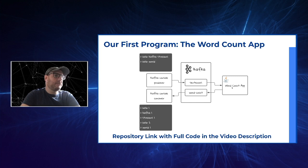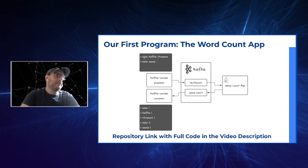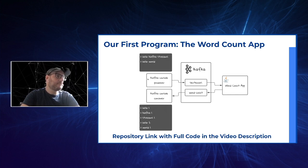So when we insert the sentence 'Hello Kafka Streams', we're going to see this result: Hello 1, Kafka 1, Streams 1 — which is the amount of times each word appears in the stream. Then we're going to send 'hello world', and because the word hello appeared twice, we're going to have hello: 2, and world: 1, because world appeared only one time.